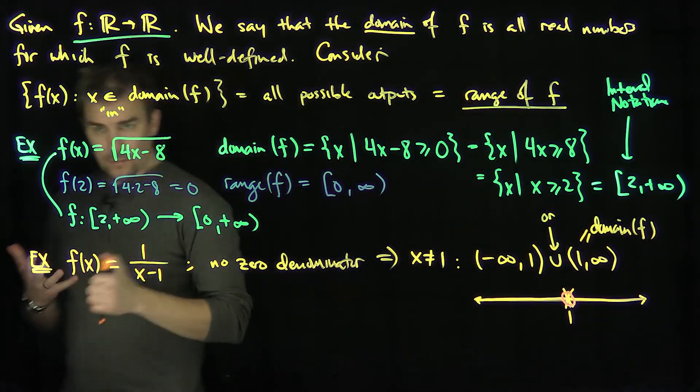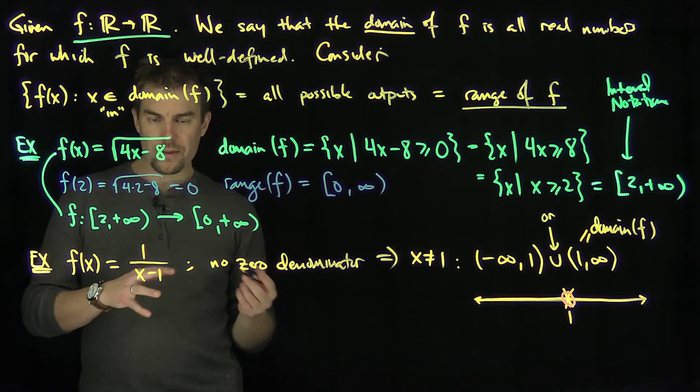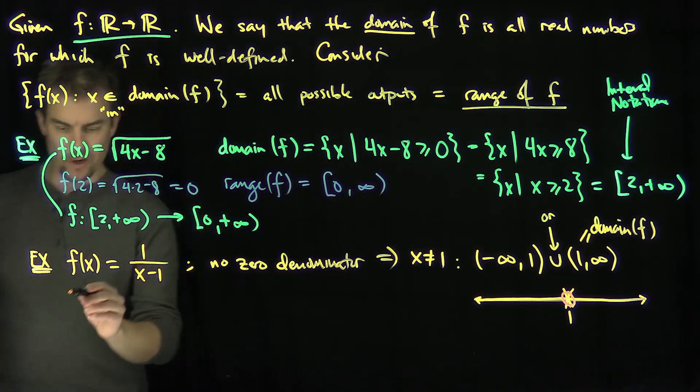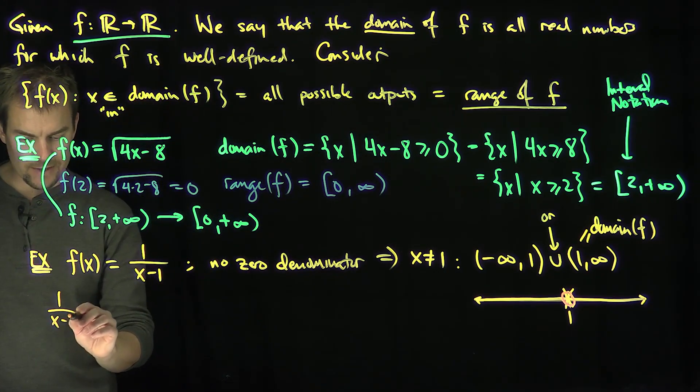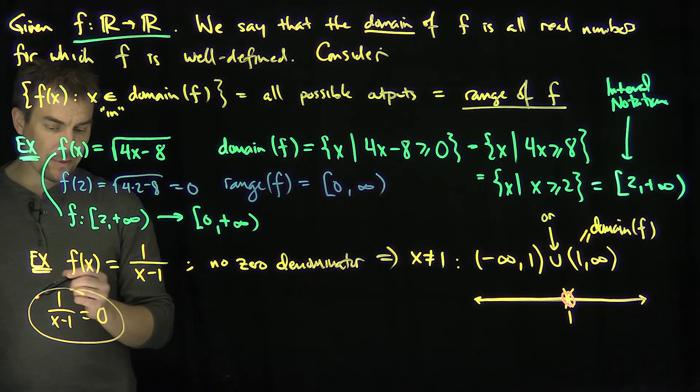Now to find the range, I claim that the range can be anything, but there's one thing the range can't be. The one thing that we can't be in the range is we cannot find a value for which I get 0. So my question is, can we find a value of x such that this is equal to 0? Well if I was to try to solve this equation, what would happen?